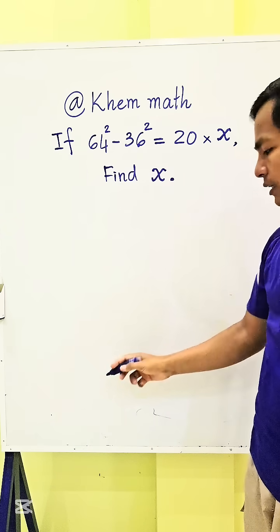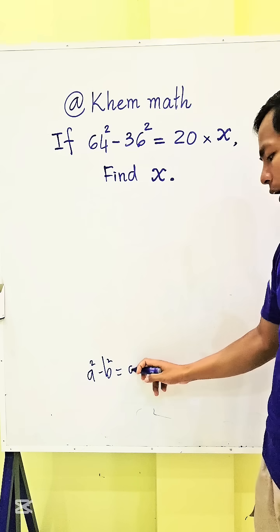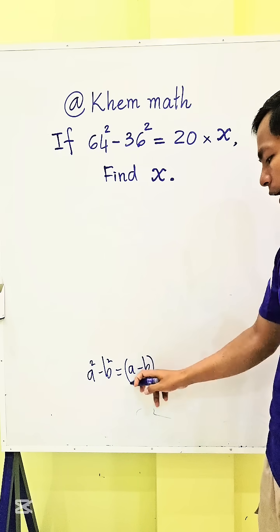Here we use the formula: if a squared minus b squared, that equals a minus b times a plus b.